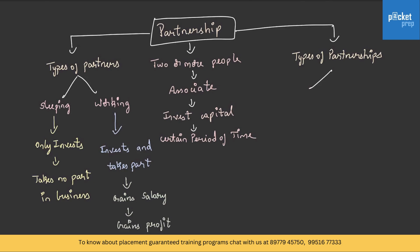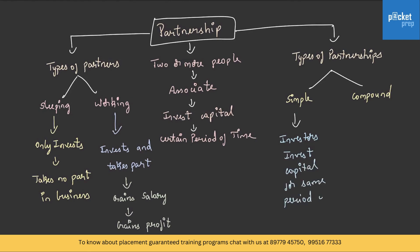There are two types of partnership: simple and compound. In simple partnership, the investors invest some capital for the same period of time. In compound partnership, the capitals are invested for different periods of time.